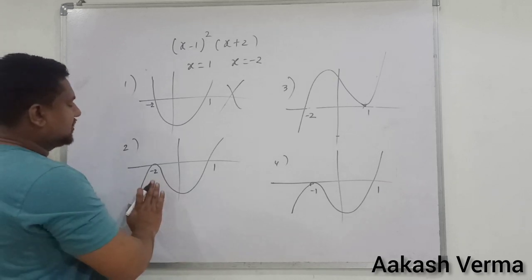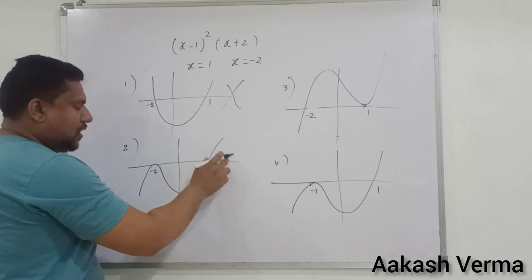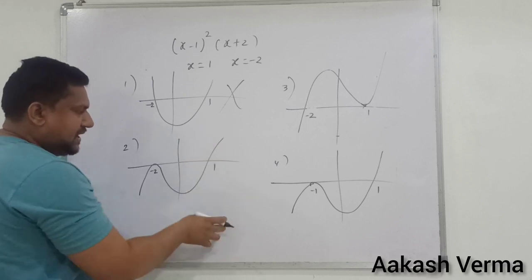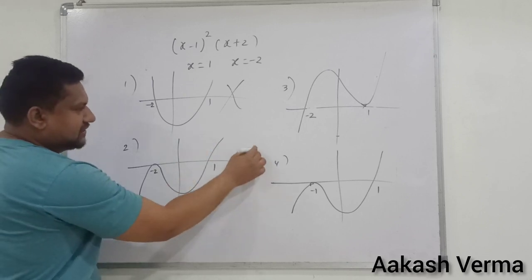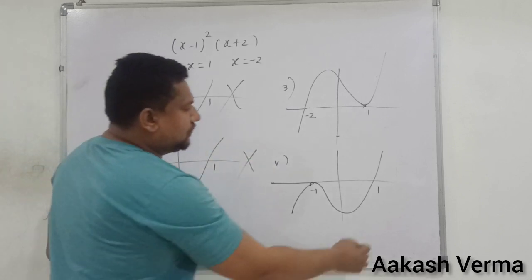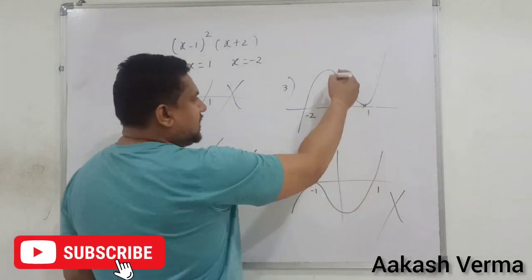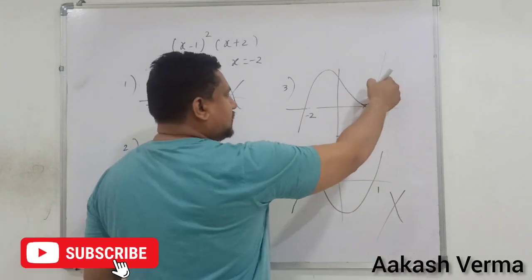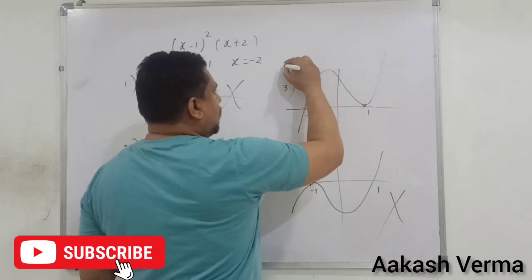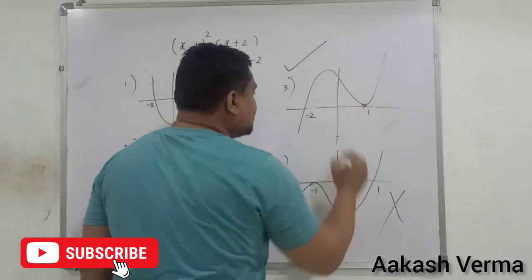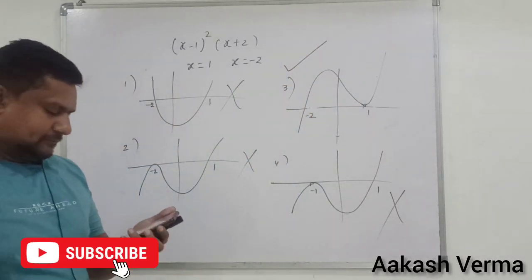इस option की तरफ आते हैं — यहाँ पर 1 के तरफ quadratic bend होना चाहिए, तो यह option भी खतम हो गया। वहाँ के तरफ quadratic bend होना चाहिए, यह भी खतम हो गया। यहाँ पर देख सकते हो quadratic bend है, तो option 3 is correct, यानि option C is correct.